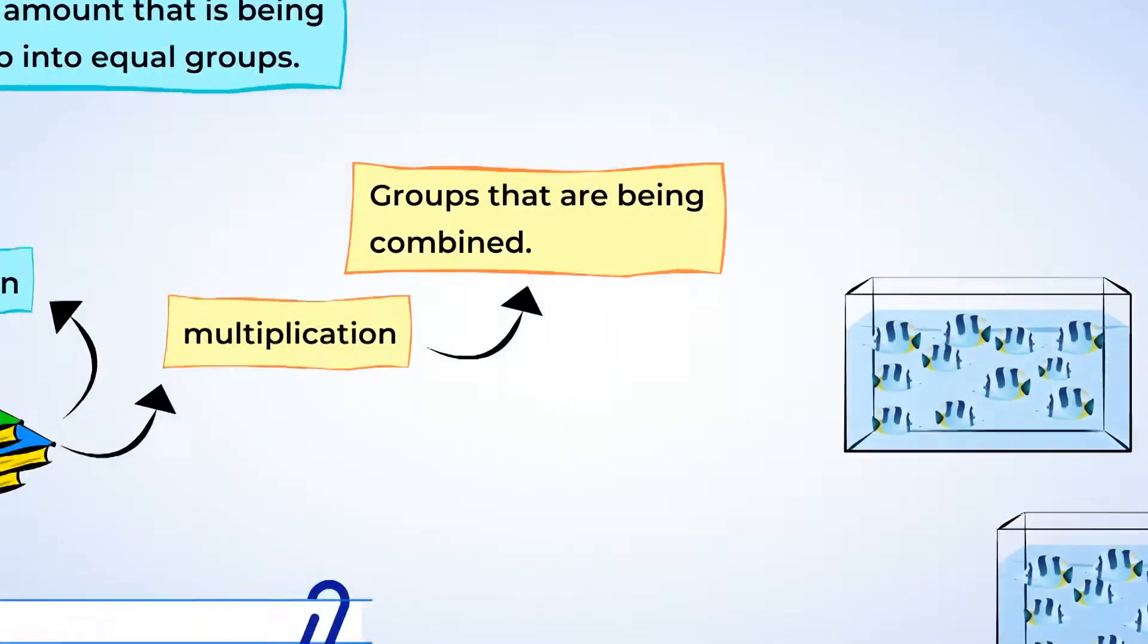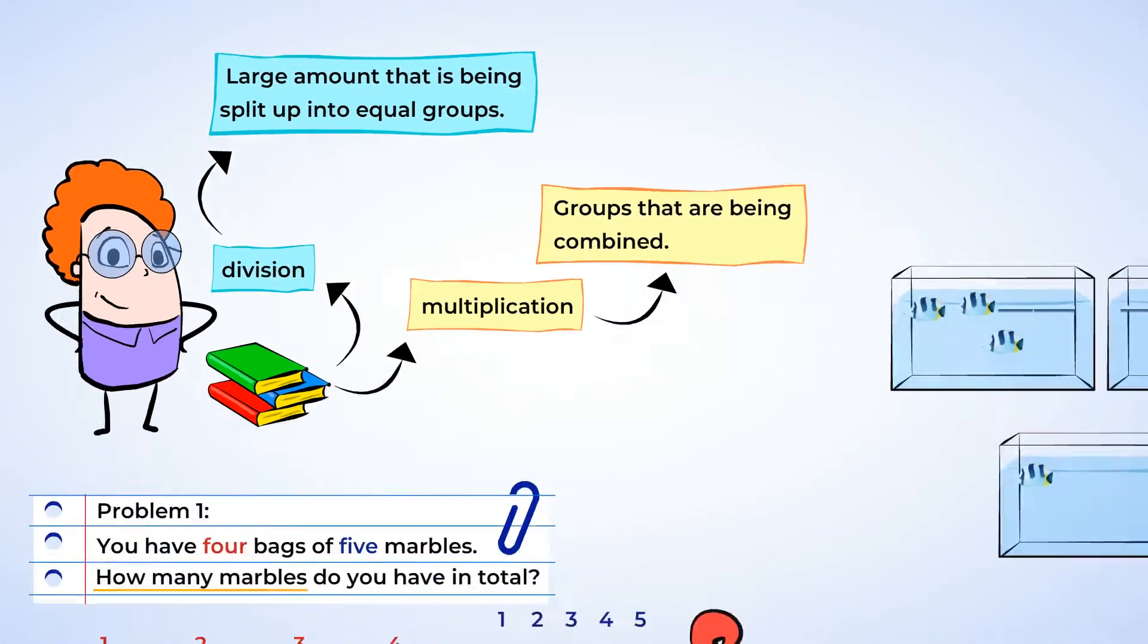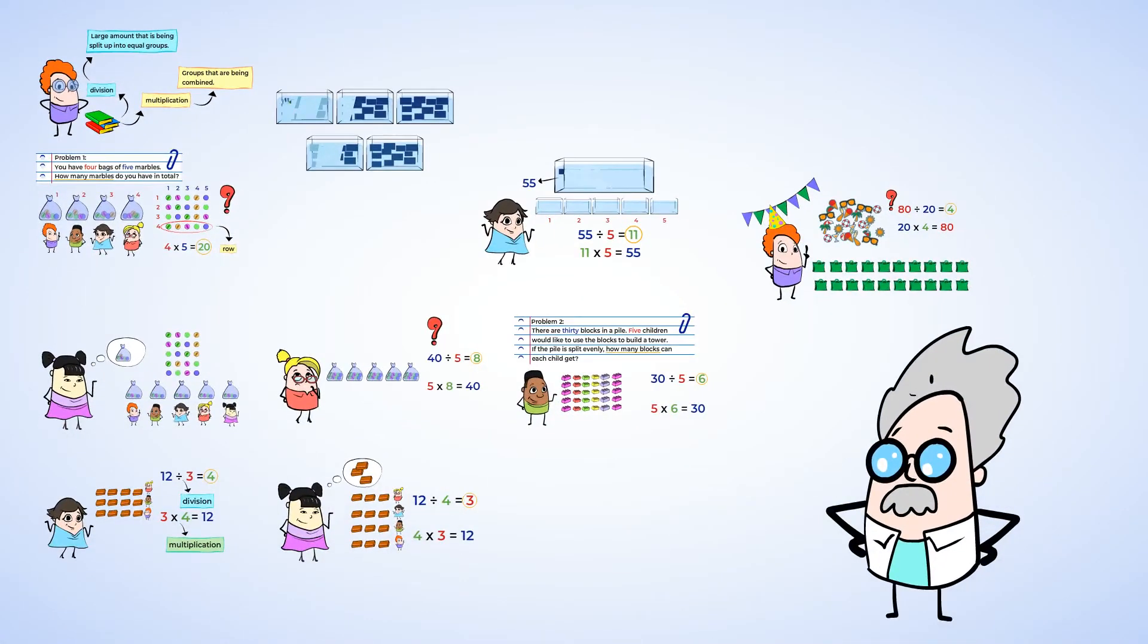Do you see how multiplication and division are so closely related? Division is splitting up a large group into smaller groups. Multiplication is combining groups to make a large group. Great job so far! Join me for more math strategies in the next video lesson.